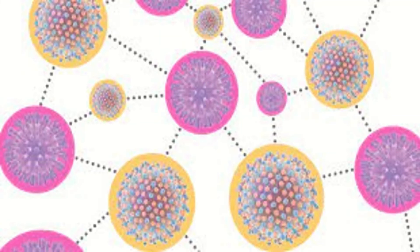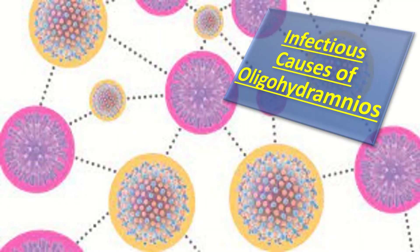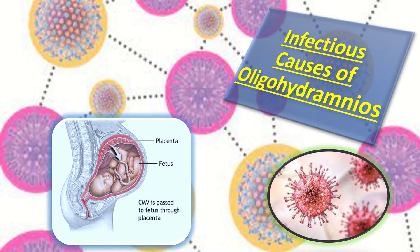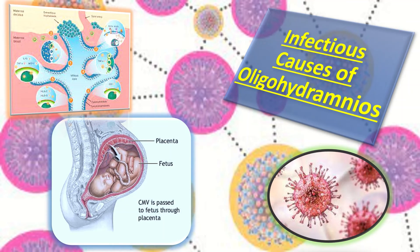Coming to the infectious causes of oligohydramnios, congenital viral infections like CMV cause oligohydramnios. Different studies have proposed different mechanisms, but most studies say that microbial invasion of the amniotic fluid by fetal infection and the development of fetal inflammatory response syndrome may lead to redistribution of blood flow away from the fetal kidneys, resulting in decreased fetal urinary output and oligohydramnios.